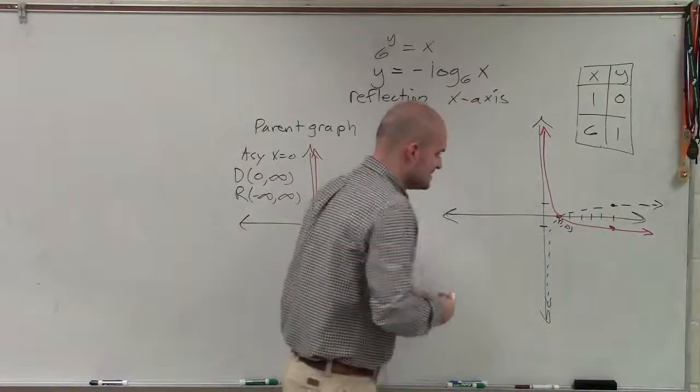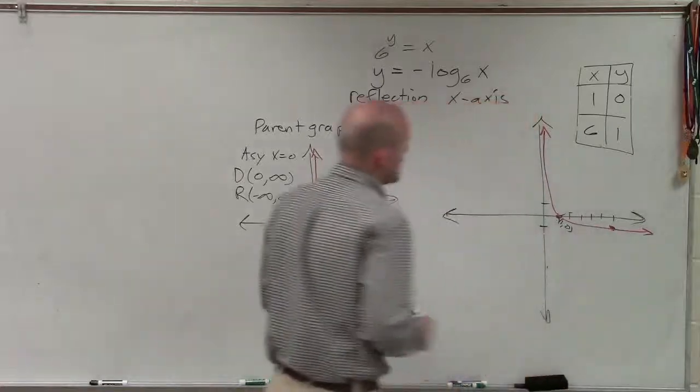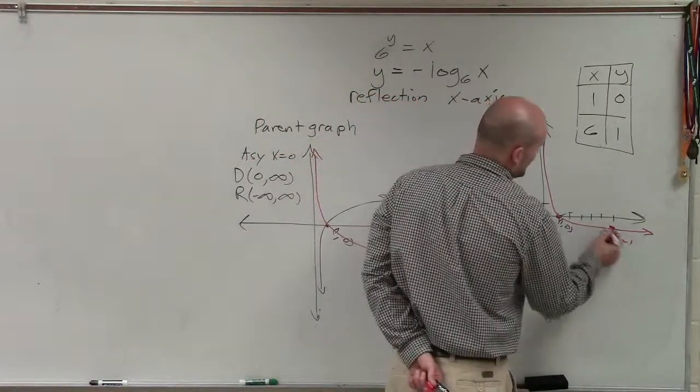Then we can just simply take our eraser and just erase the original parent graph. And there, now we have graphed it with two points, 1 comma 0 and 6 comma negative 1.